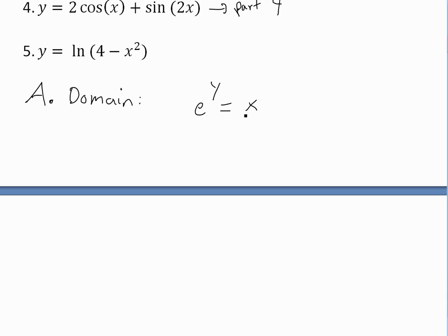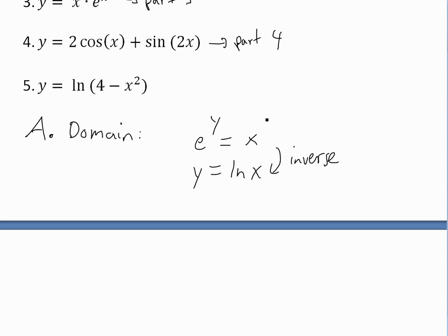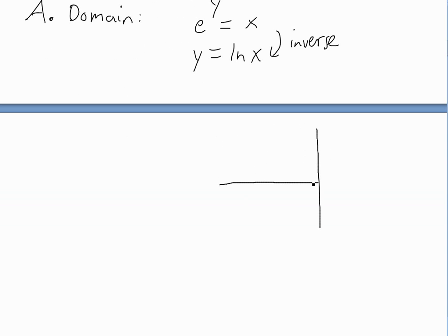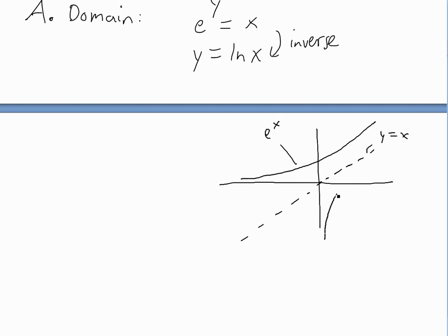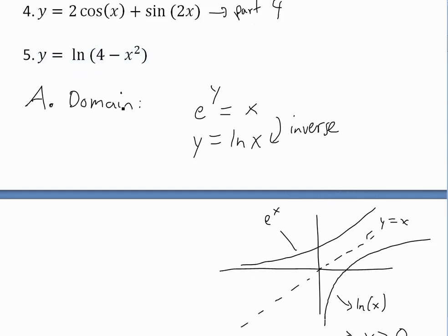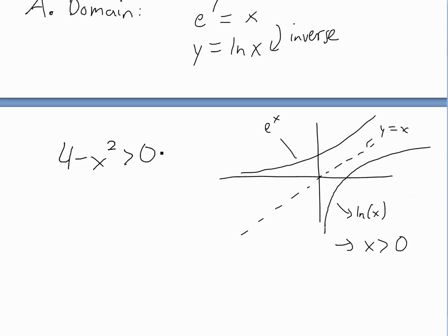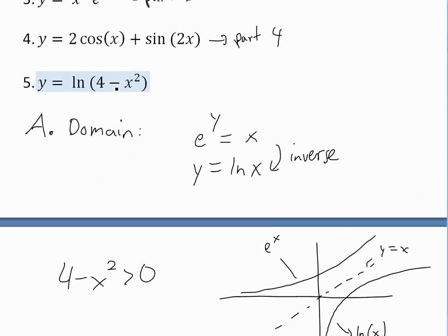If you recall, e to the y is the inverse of y equals ln(x). If you see how the curve of e to the x would be, then with the inverse — also a natural log — it's just a reflection off of the y equals x line. So this is how the curve of ln(x) would look: just a mirror image across that line. In this case, x is only defined for values greater than zero.